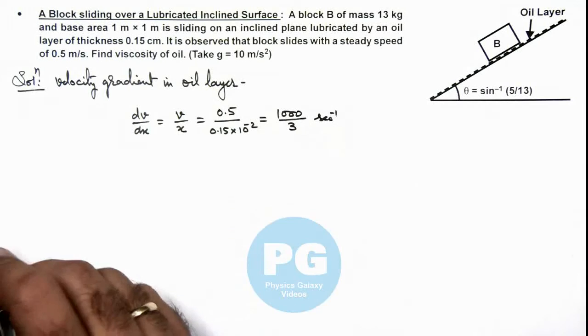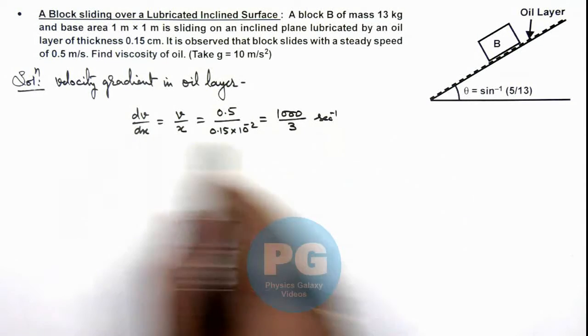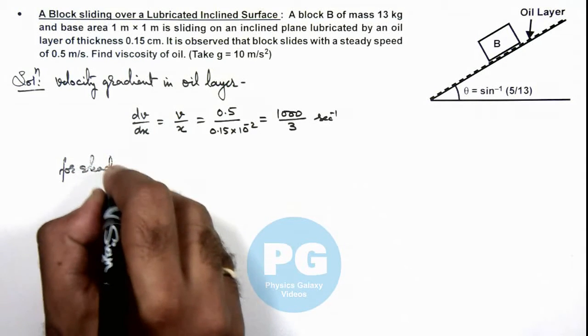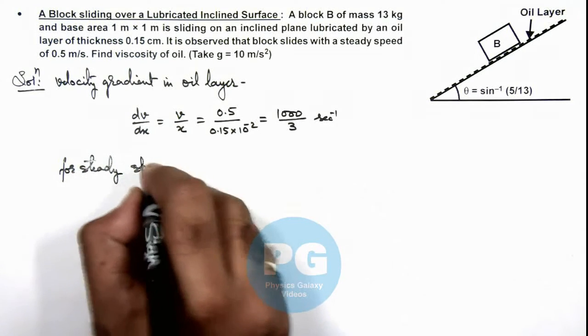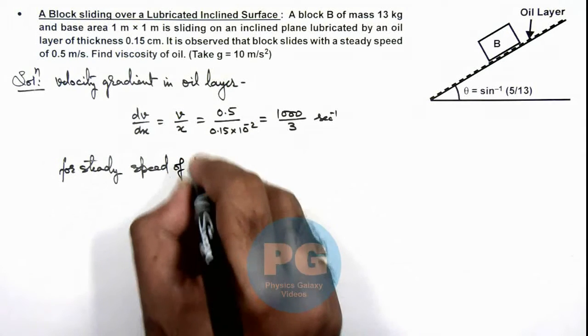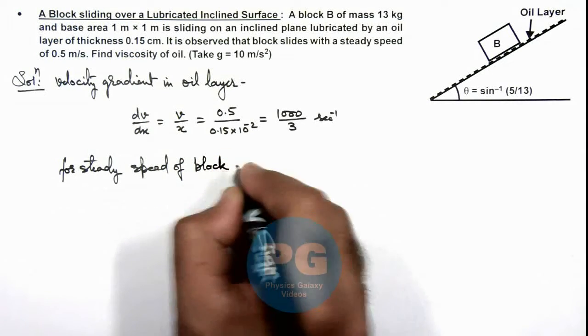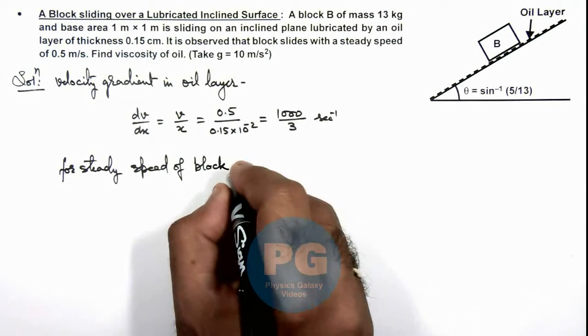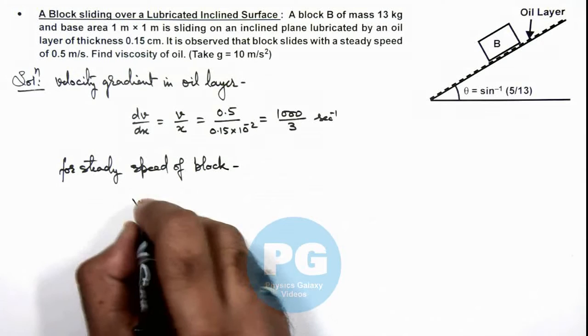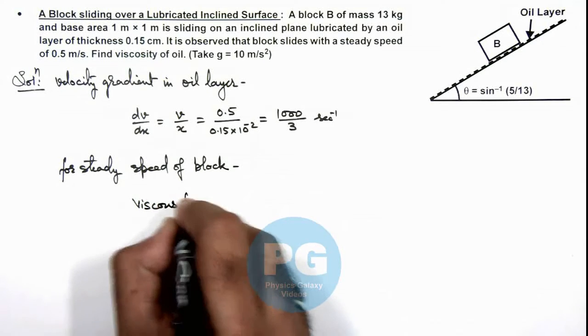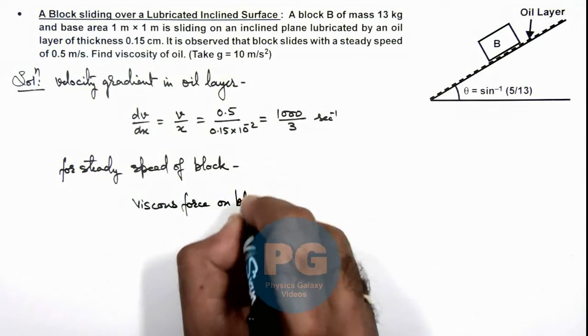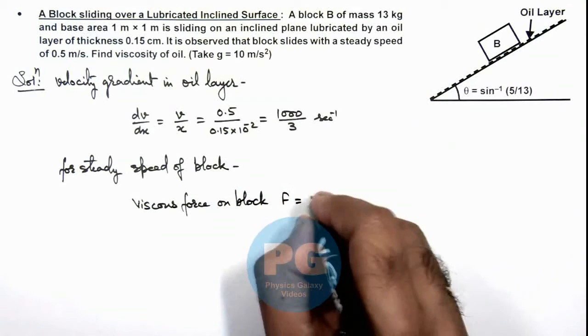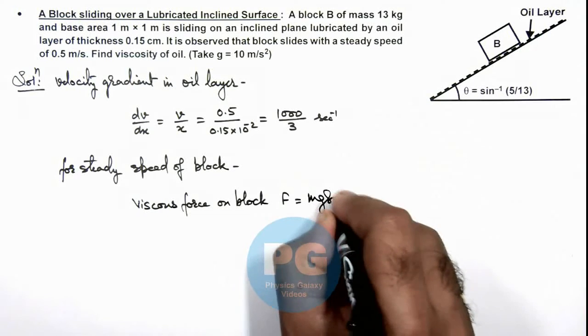In this situation, if this is the velocity gradient, we can write for steady speed of the block, it must be under the influence of balanced forces or zero net force. So we can write, in this situation, the viscous force on the block F must balance the force of sliding, which is mg sin θ acting on it.